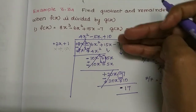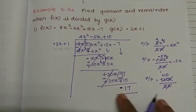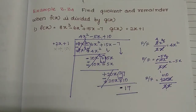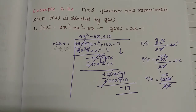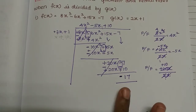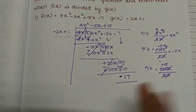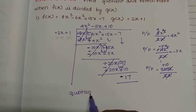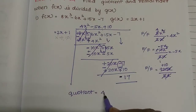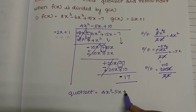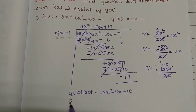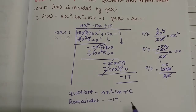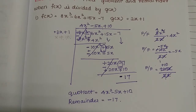So it is not possible to divide further. Quotient is equal to 4x squared minus 5x plus 10, and remainder is equal to minus 17. Next subdivision.